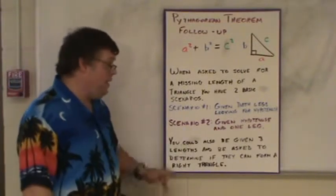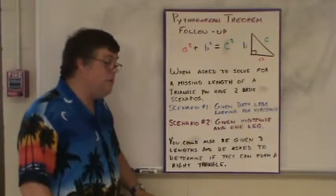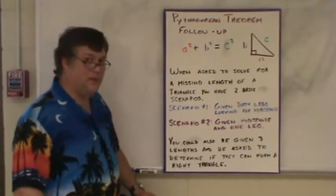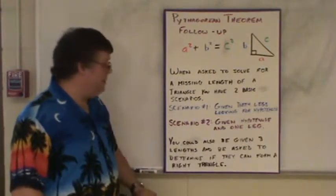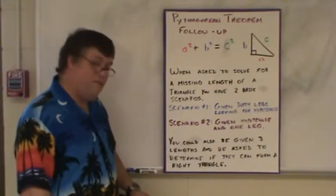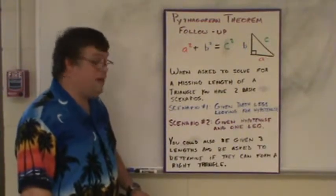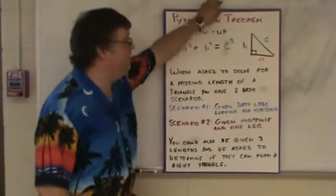Scenario one, you're given both legs and you're looking for the hypotenuse. Scenario two, you're given the hypotenuse and one of the legs. There's also another type of question you might be asked. You could also be given three lines and asked to determine if they can form a right triangle. Again, you would be using the Pythagorean Theorem to solve those types of questions.